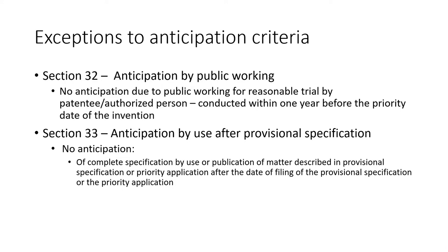Section 32 provides exceptions to anticipation by way of public working. Sometimes for certain inventions you need to conduct a reasonable trial before the public to identify whether the invention is feasible. If you are doing that for the purpose of reasonable trial, and it is done by the patentee or any authorized person, it won't be considered anticipation — provided the reasonable trial was not conducted more than one year before the priority date or the first application filed.